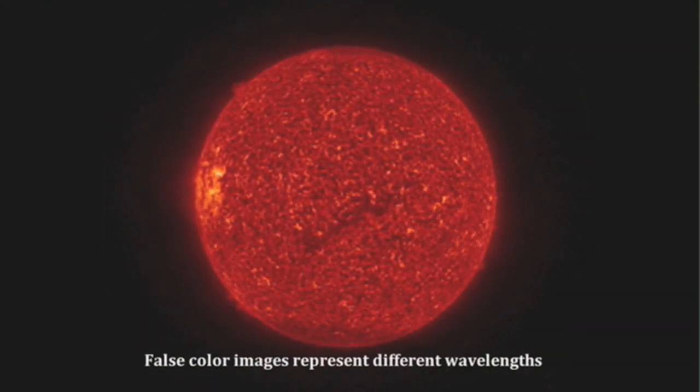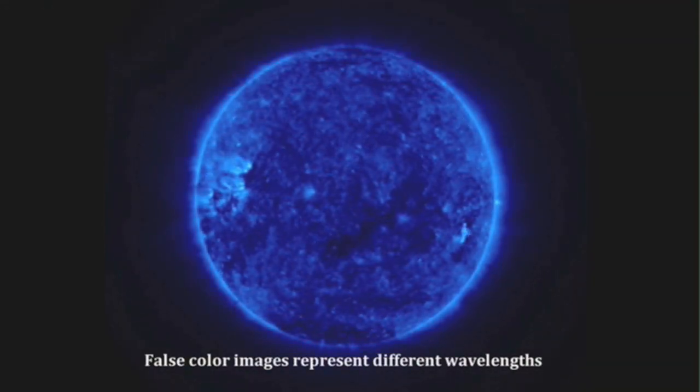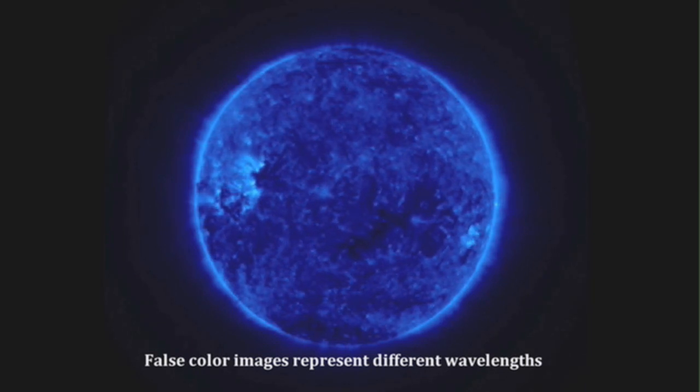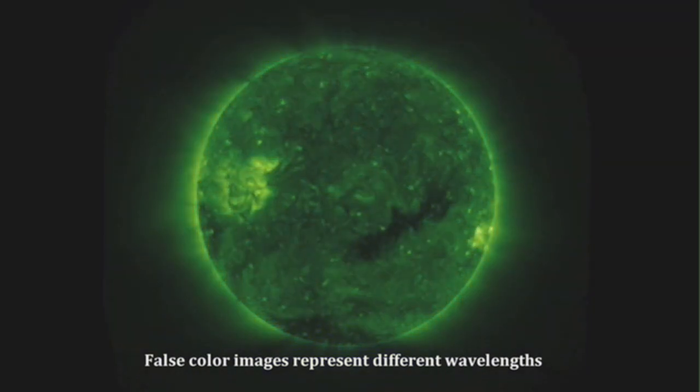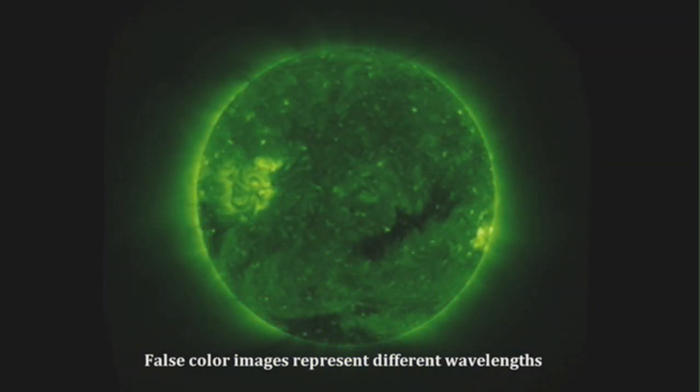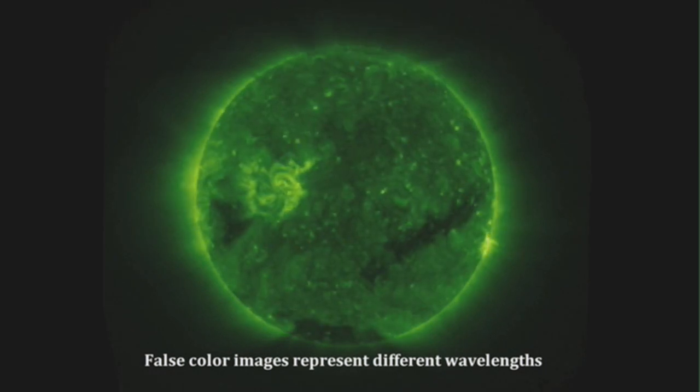Here's our sun again. Each color you see represents radiation from different parts of the electromagnetic spectrum. By looking at the sun in different wavelengths, we are able to notice different features.